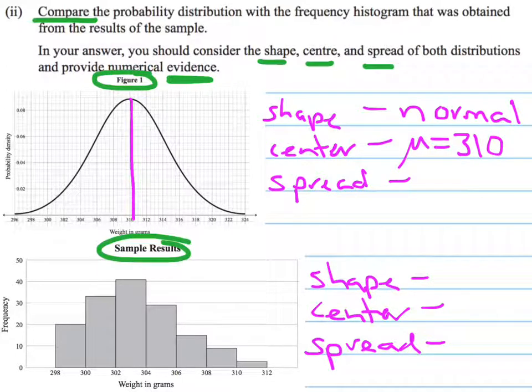And in terms of the spread, that's going from 296 up to 324. So that is a spread of about 28, a range. So I just want to note that's the range that I'm just looking at there.